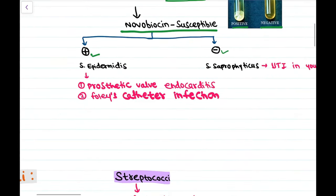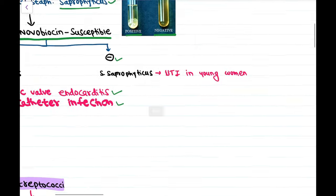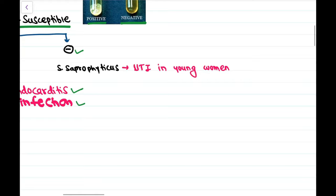Staph epidermidis causes prosthetic valve endocarditis and Foley's catheter infection, while Staphylococcus saprophyticus causes UTI in young women.